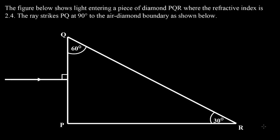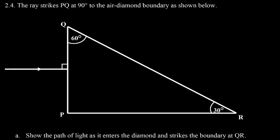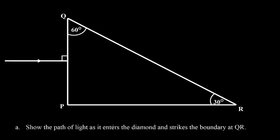Okay, so Junior Roberts here. We're on to this question: the figure below shows light entering a piece of diamond PQR where the refractive index is 2.4. The ray strikes PQ at 90 degrees to the air-diamond boundary. So here we have our diamond PQR, and this ray strikes the boundary at PQ at 90 degrees. The first part asks us to show the path of light as it enters the diamond.